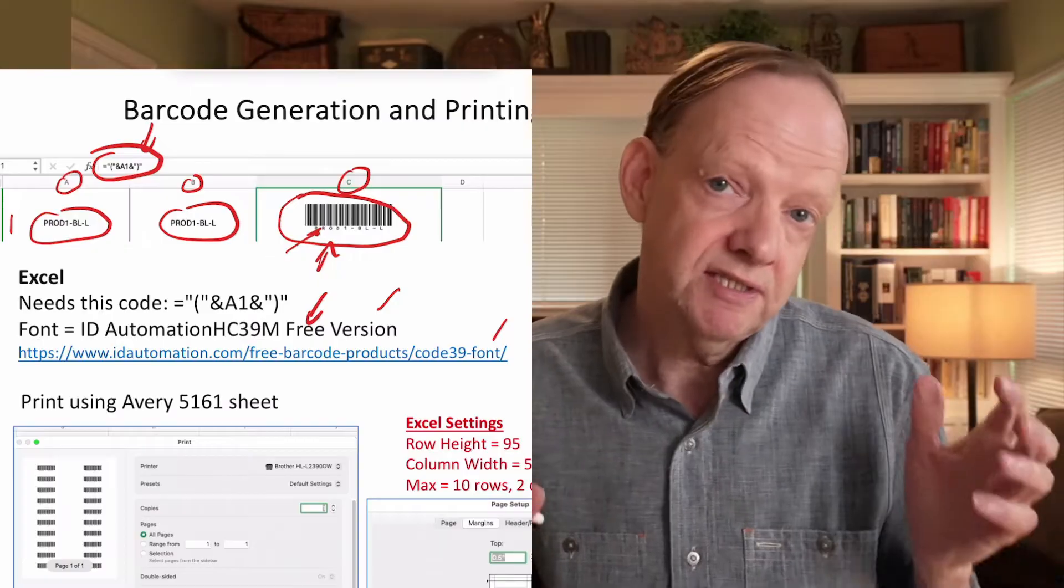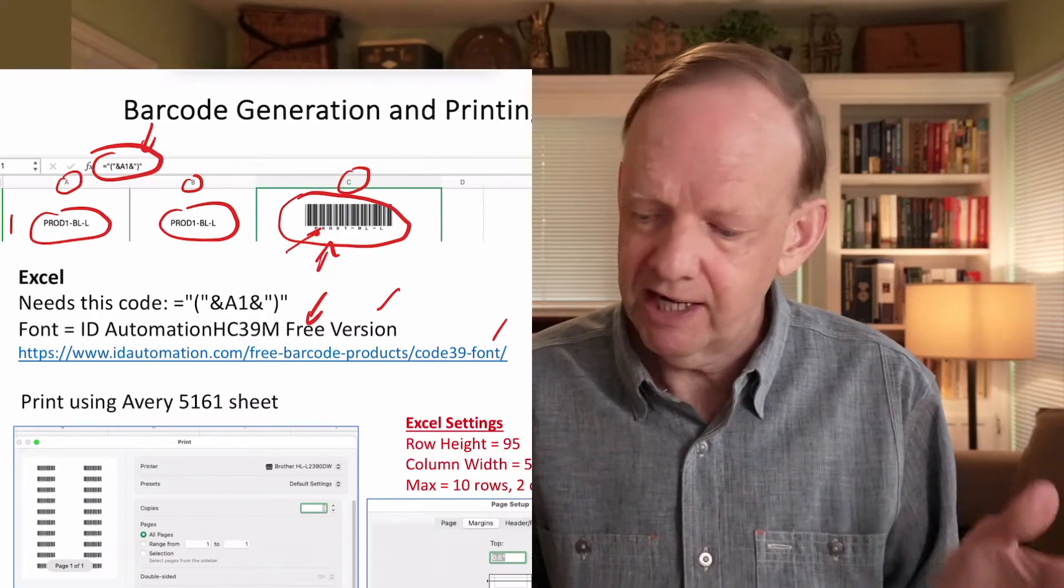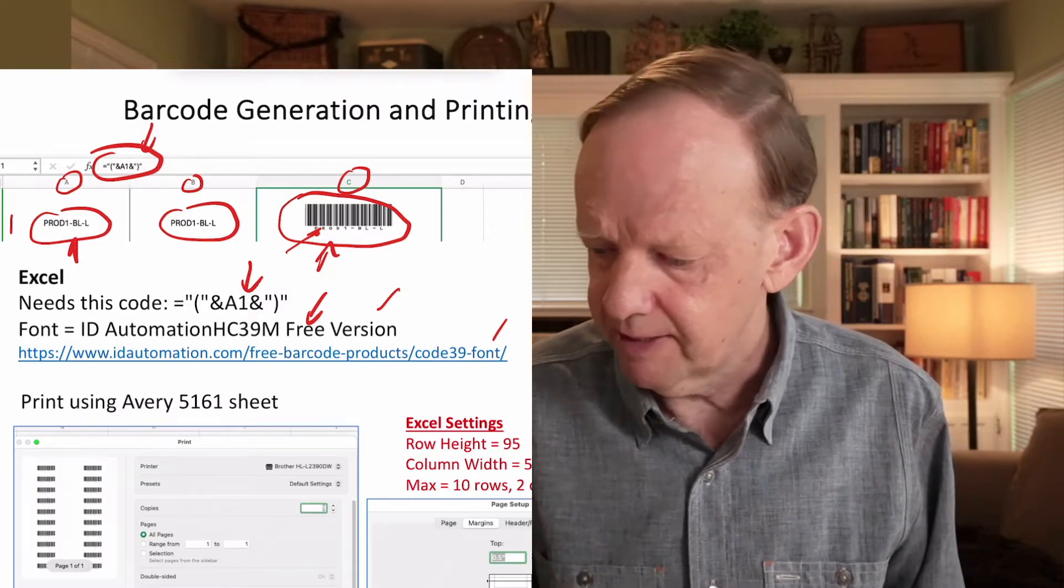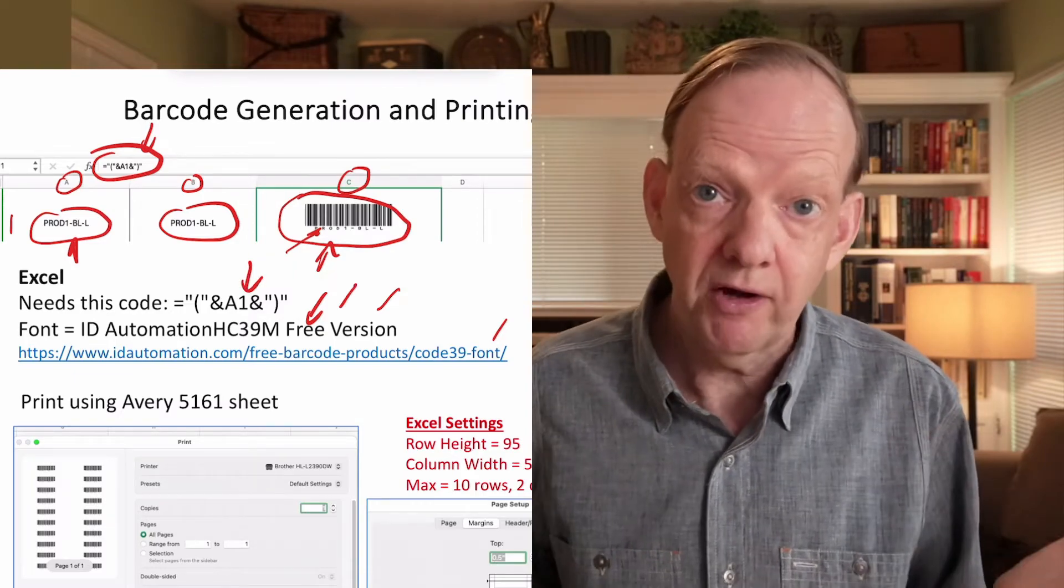So what we're doing is telling Excel, take the value we typed in, take the code to convert it to a barcode, give it a barcode font, and end up with a barcode.